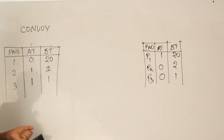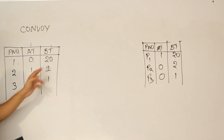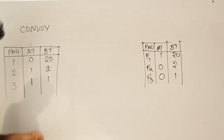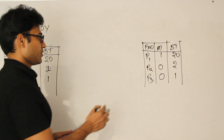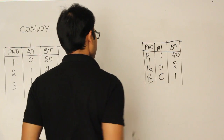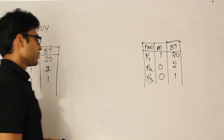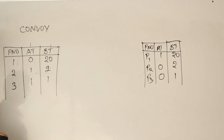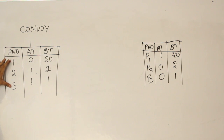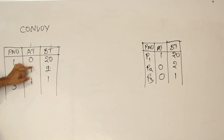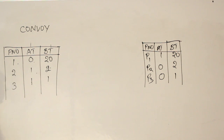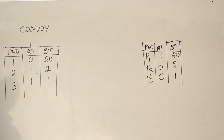Now let's see how it works. I will take two cases to study the effect — it will give you a clear understanding. I have three processes with arrival times 0, 1, 1 and burst times 20, 2, and 1 respectively. Let me schedule them first.